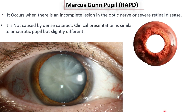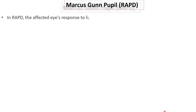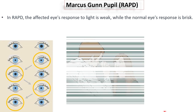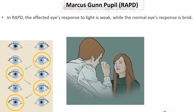In RAPD, the pupil shows a weak response when the affected eye is stimulated, while the normal eye has a quick response when it is stimulated. The swinging flashlight test is a very simple test that helps to highlight the difference between a normal pupil and RAPD.